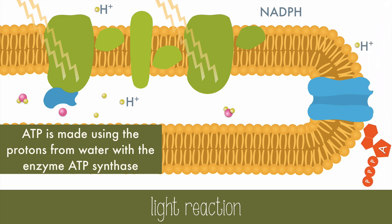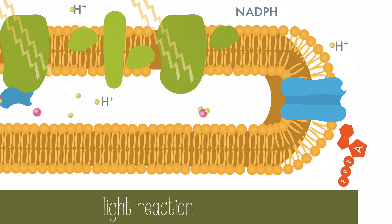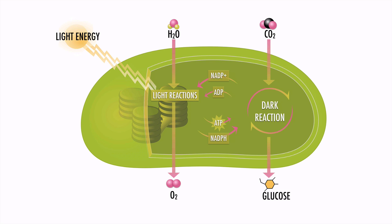Then it's time for the dark reaction. The dark reaction occurs in the stroma, the fluid surrounding the thylakoid discs. But "dark reaction" is kind of a misnomer — it can and does happen in the presence of light; it just doesn't need light to occur. It's also referred to as the Calvin cycle, or the light-independent reaction.